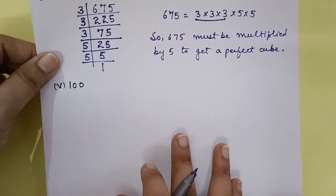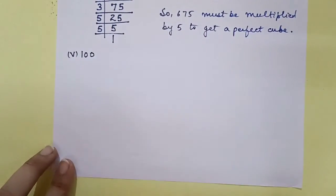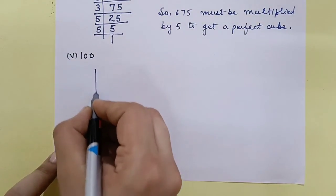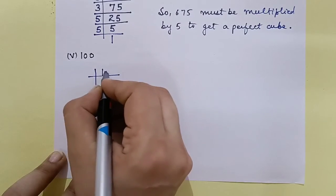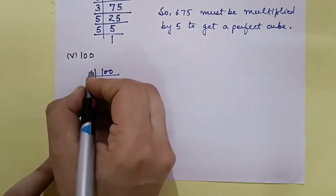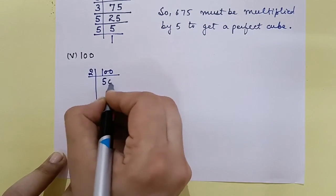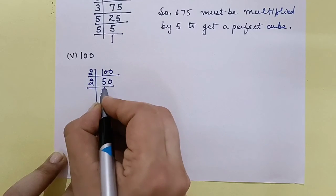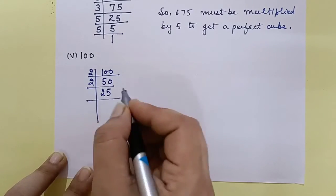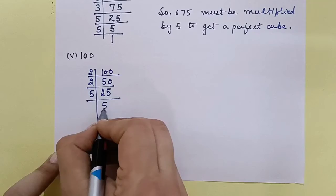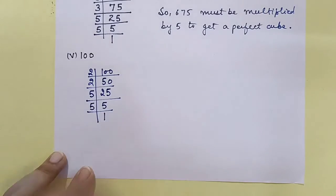Next, let's see the 5th part. The number is 100. Now let's do the prime factorization of 100. It first goes in the table of 2: 100 ÷ 2 = 50, ÷ 2 = 25. Now with 5: 25 ÷ 5 = 5, ÷ 5 = 1.